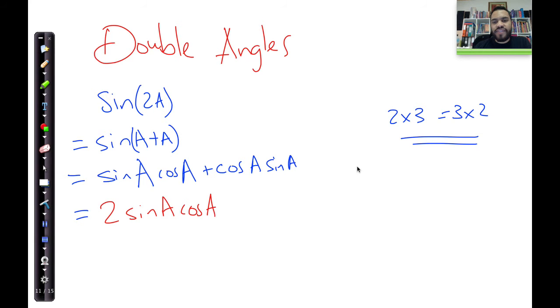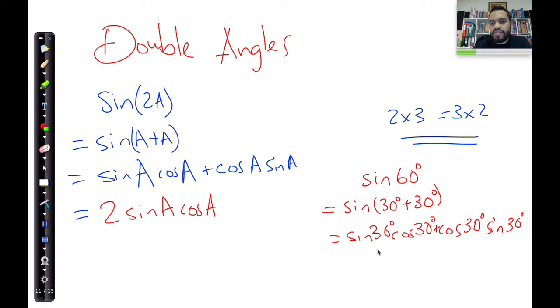Now, what does this mean? It means if I said, for argument's sake, you already know the answer of sine of 60 degrees, but what if you said sine 60 is equal to sine of 30 degrees plus 30 degrees? Well, that's sine cos cos sine. 30, 30, 30, 30 plus remains plus and 30 degrees over there.